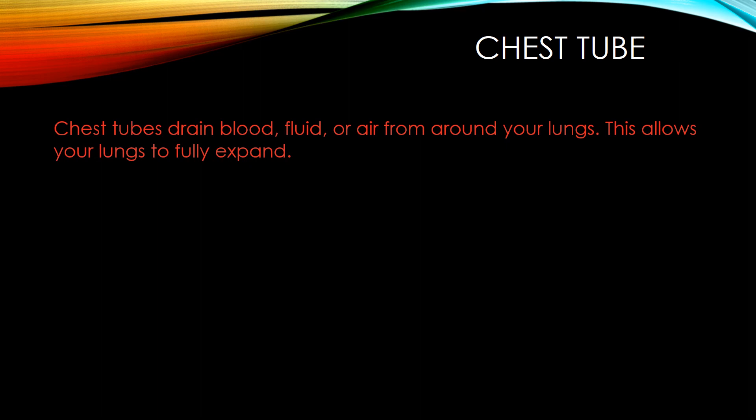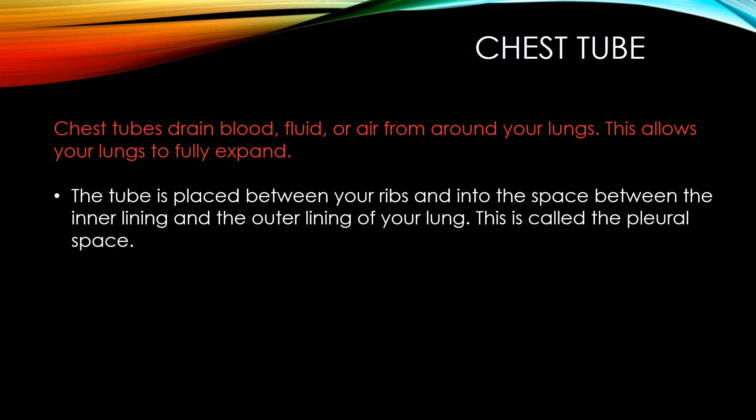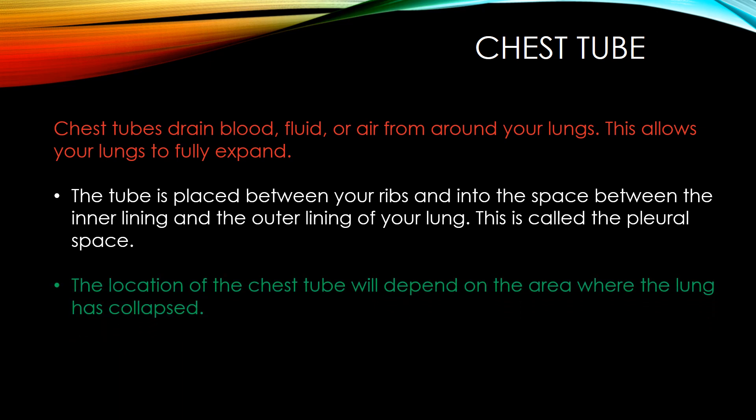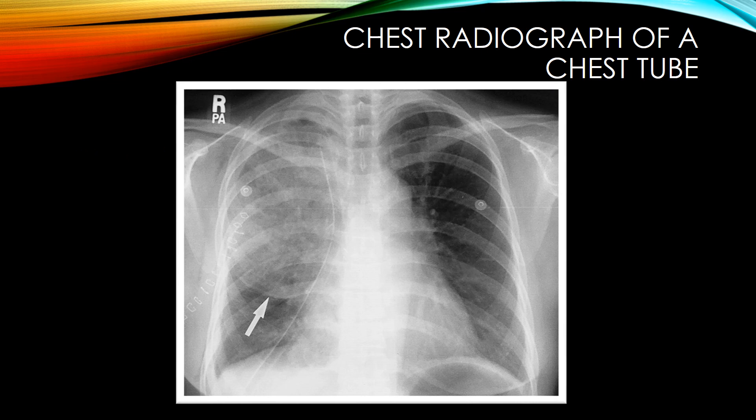Chest tubes drain blood, fluid, or air from around your lungs, allowing your lungs to fully expand. The tube is placed between your ribs and into the space between the inner and outer lining of your lungs, called the pleural space. The location of the chest tube will depend on the area where the lung has collapsed. On the radiograph, you can see on the right side where the lung has collapsed and the tube has been inserted all the way up into the apices of the right lung.